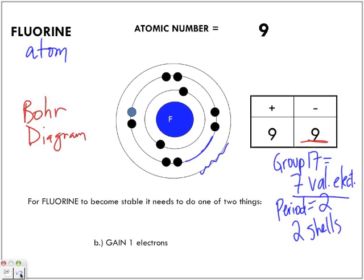The count used to be nine protons, nine electrons. But now look at the difference — we have extra electrons. The protons are less than the number of electrons, less by one. Which means the charge for fluorine is negative one. So now we no longer have a fluorine atom — we have a fluorine ion.